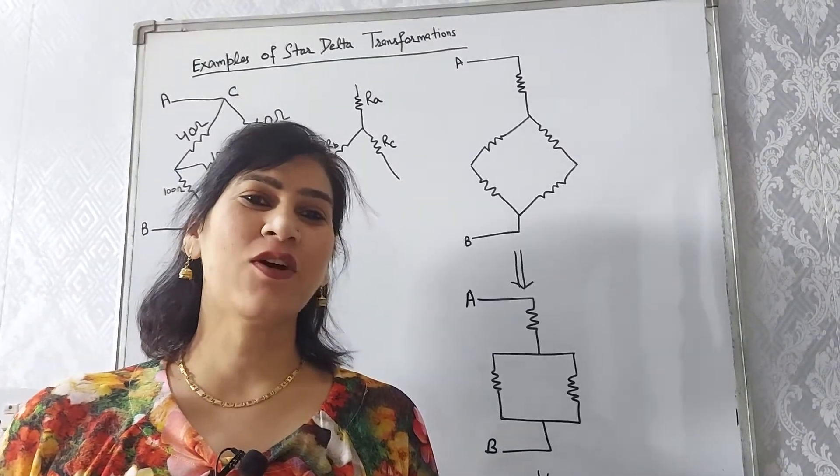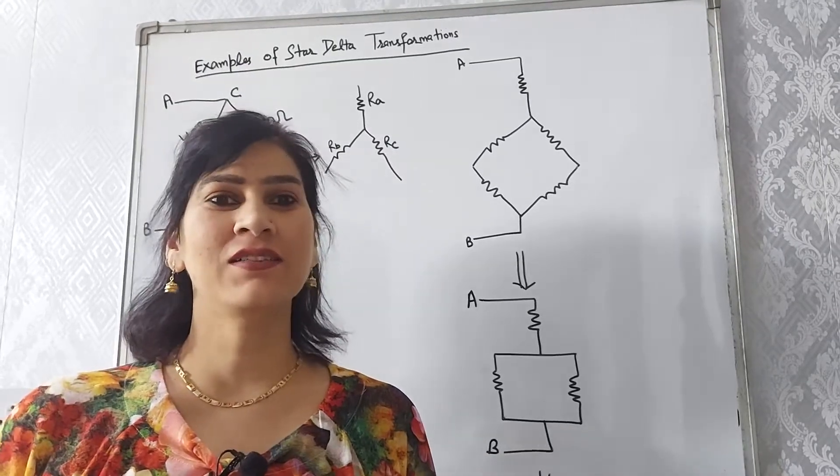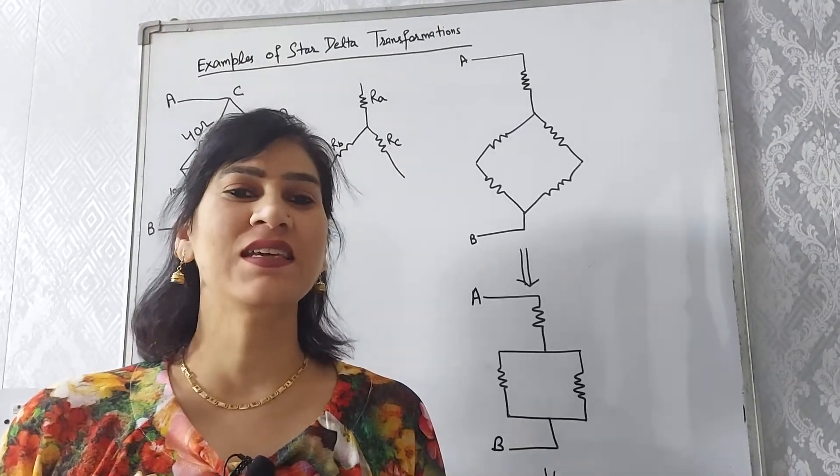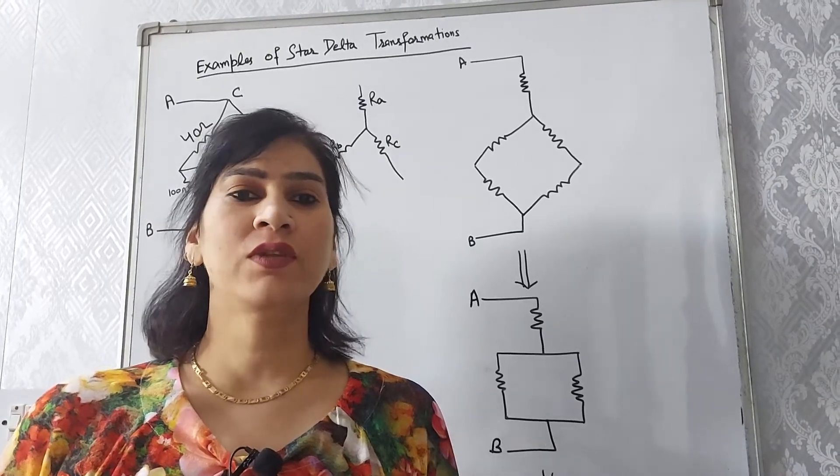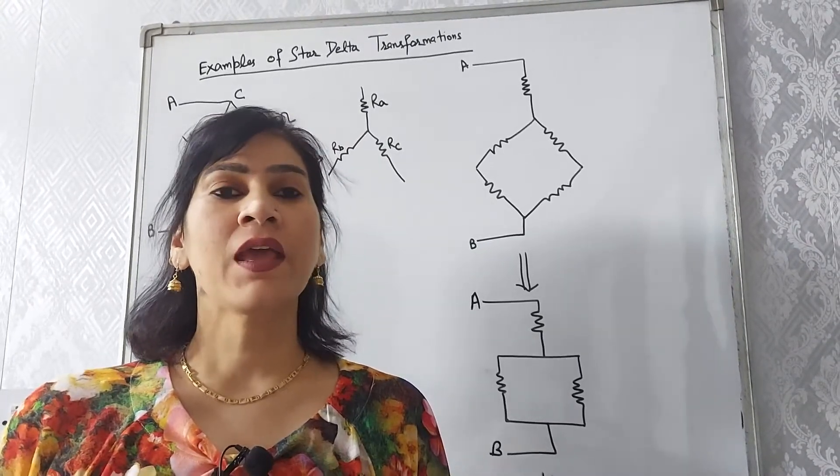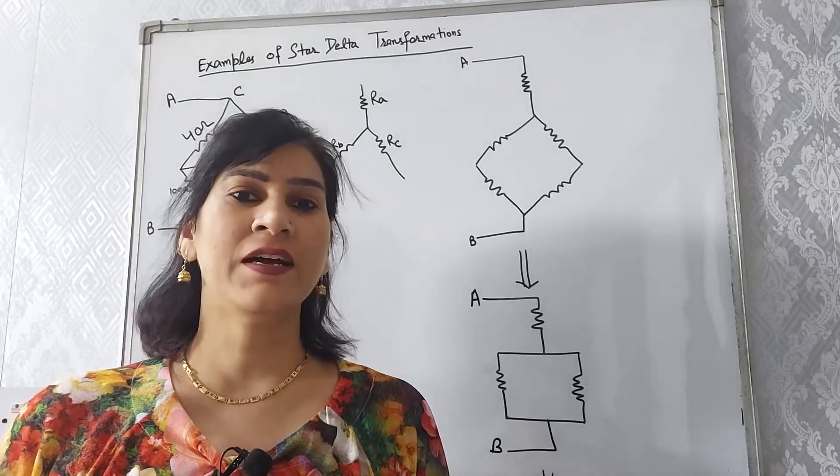Welcome to the lecture series of basic electrical engineering. The subject code is ECE101. Today in this video I will give you the demonstration of some examples of star delta transformation.